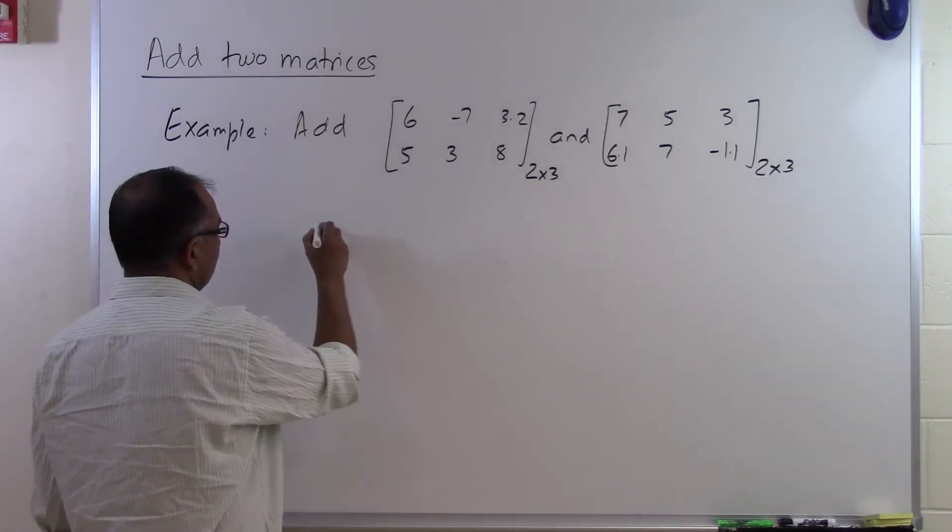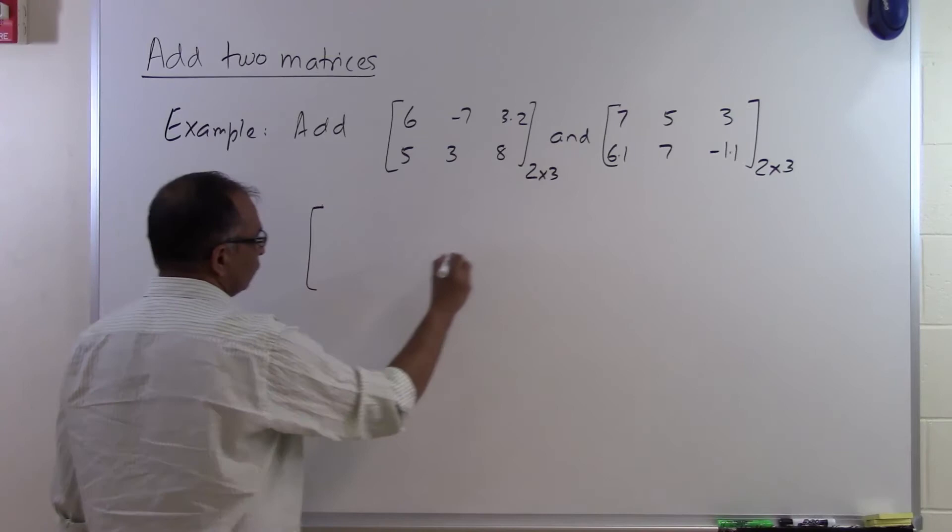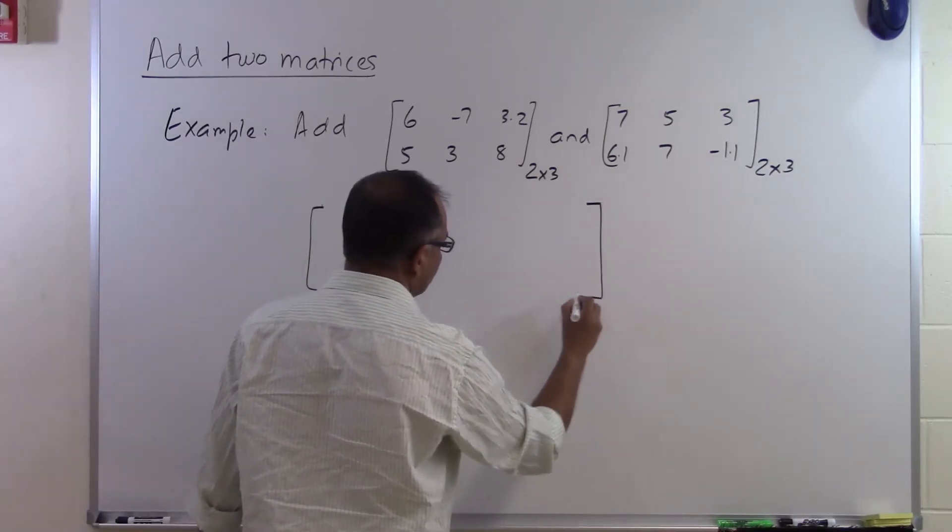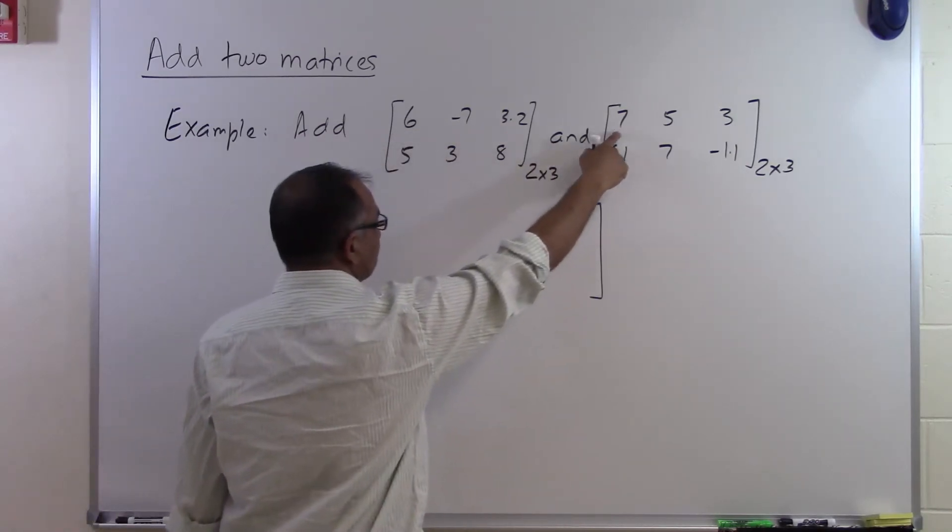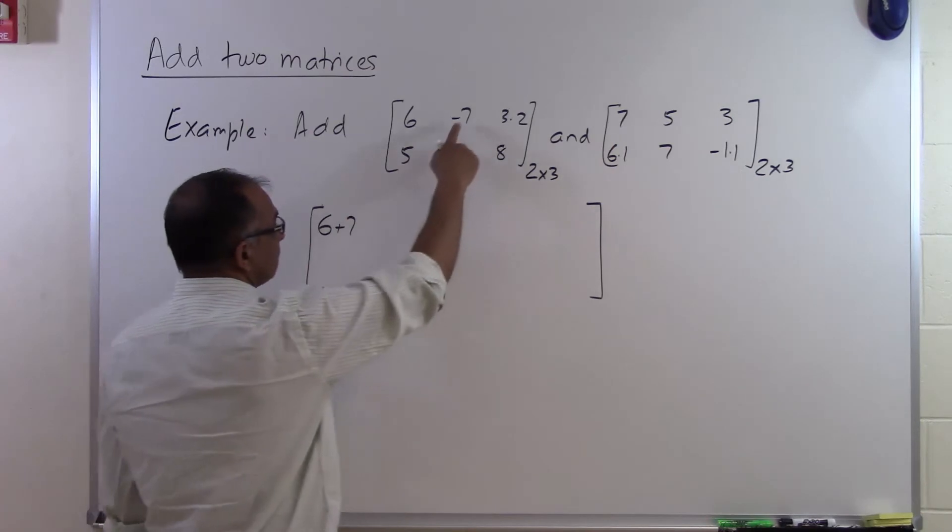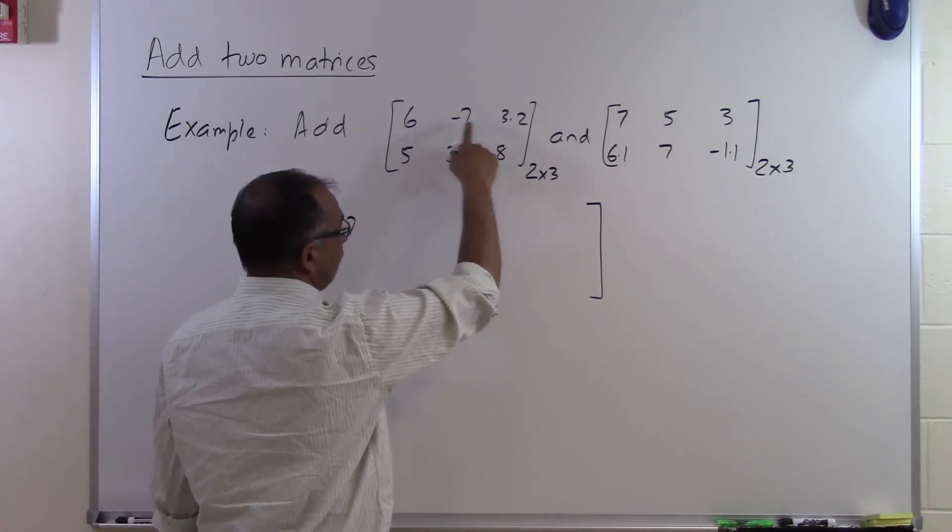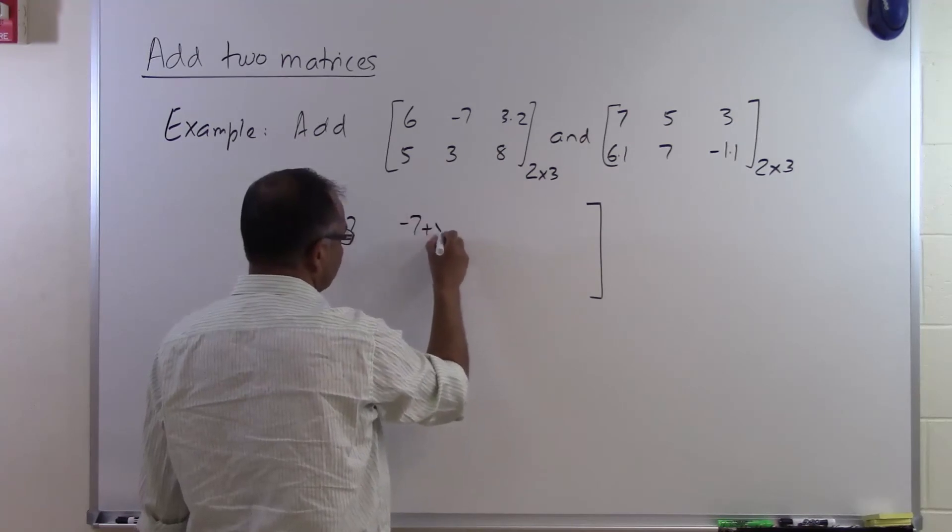To add the two matrices, we add them element by element. The first row, first column here is added to the first row, first column there: 6 plus 7. The first row, second column is added to the first row, second column there: -7 plus 5.